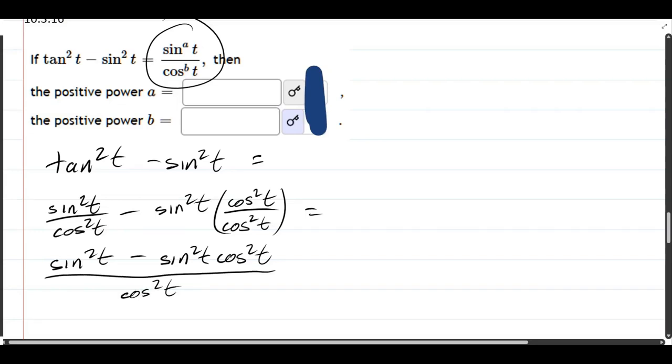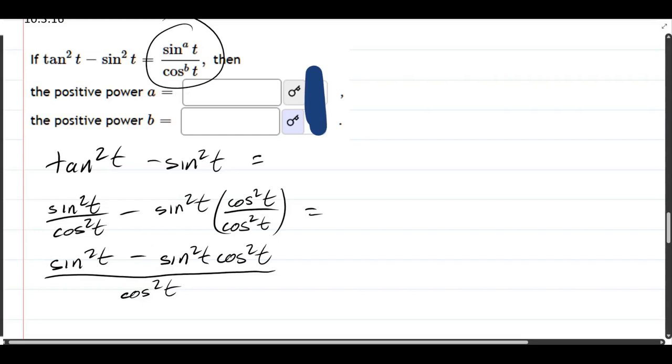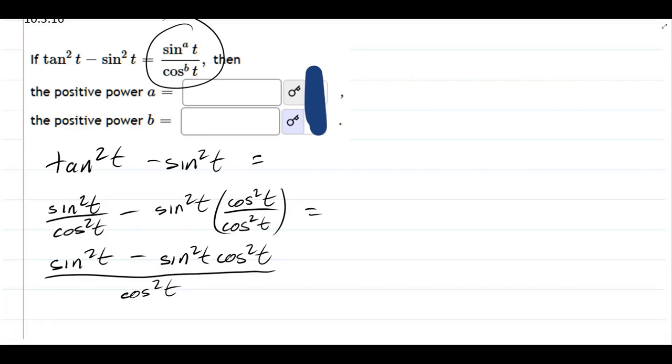Now, we have sine squared t minus sine squared cos squared divided by cos squared t. You may be tempted to cancel these cos squared cos squared, but remember, you're subtracting here. If you are multiplying instead of subtracting, you could cancel, but we're subtracting, so we're not allowed to cancel.